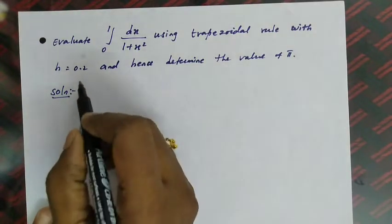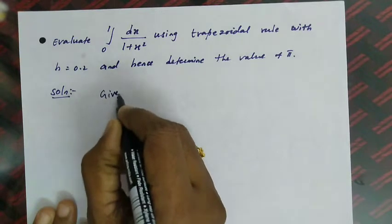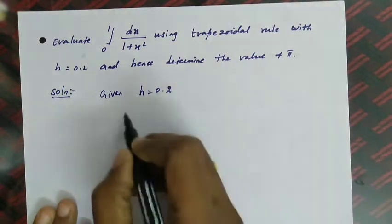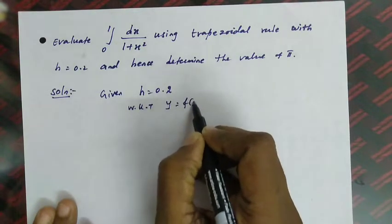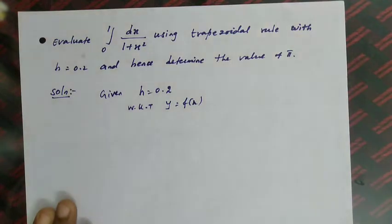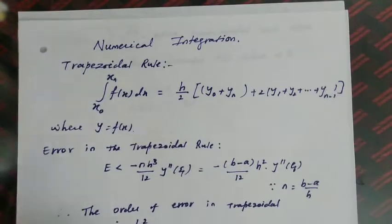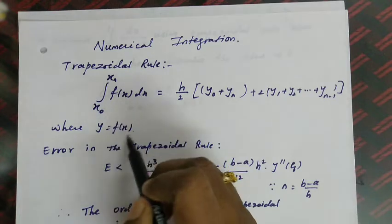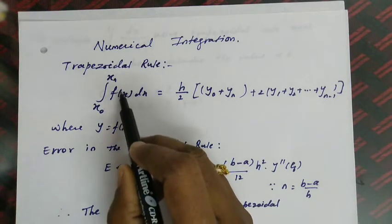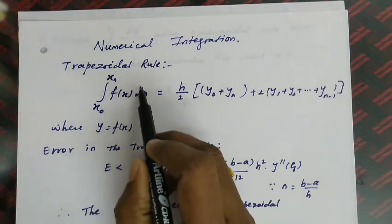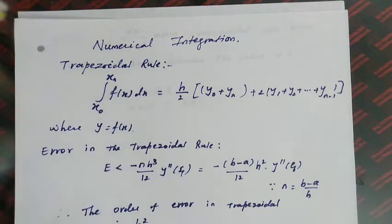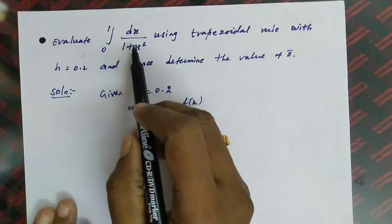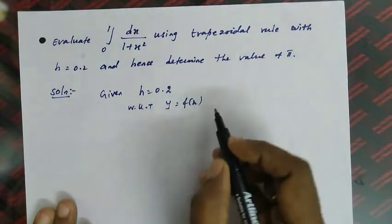Given: h = 0.2. We know that y = f(x). In the formula, the integral of f(x)dx corresponds to y = f(x). So except for dx, whatever is given in the question is our f(x). In this question, except dx, what remains is 1/(1+x²), so y = f(x) = 1/(1+x²).